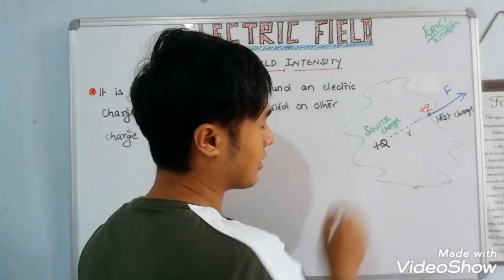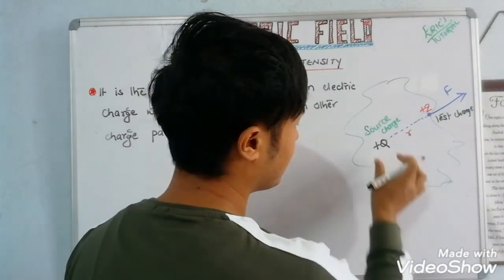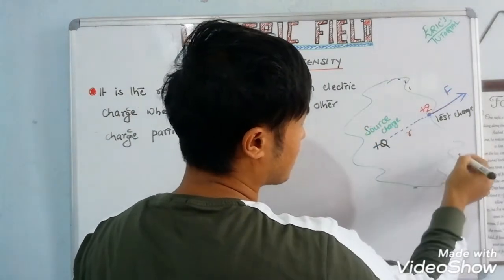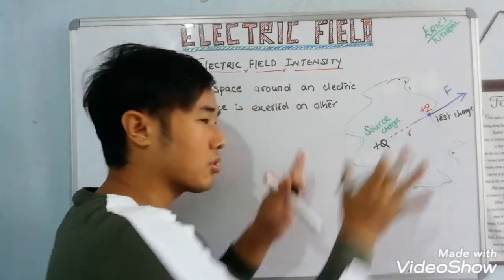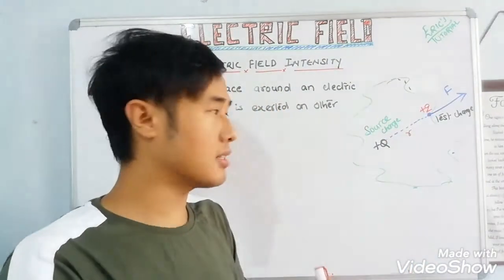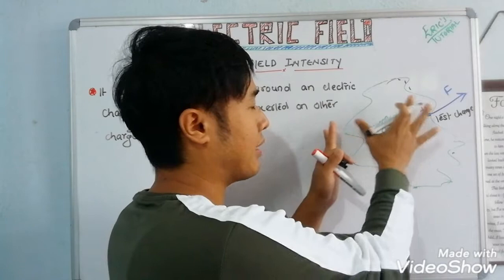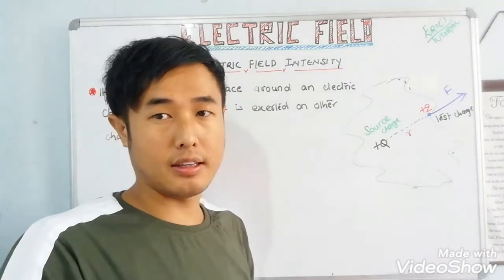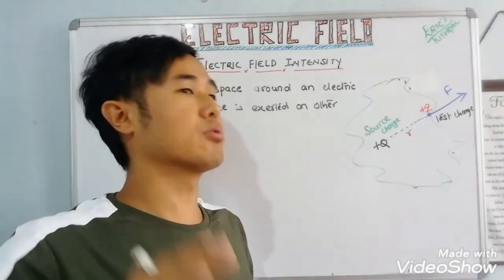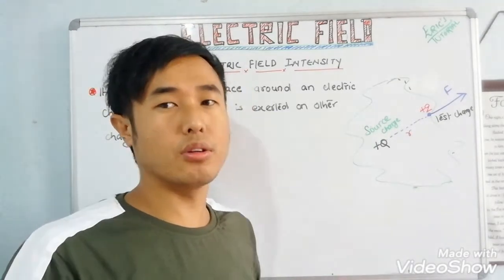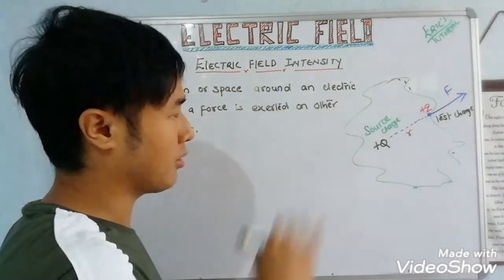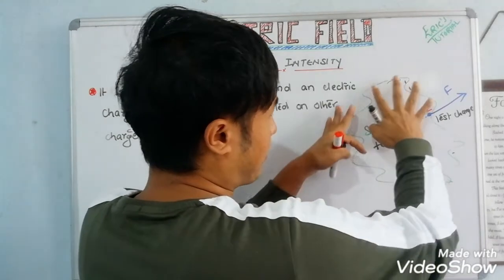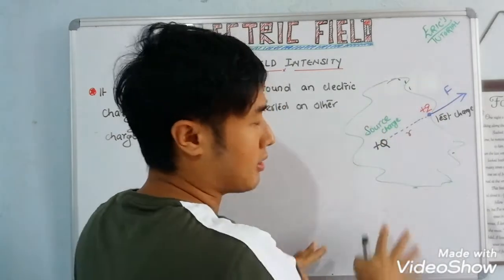Suppose we consider a charge — this is the source charge. The region or space around it is the electric field, which extends to an infinite distance, though that is practically not possible. This source charge will create an electric field or region around it.